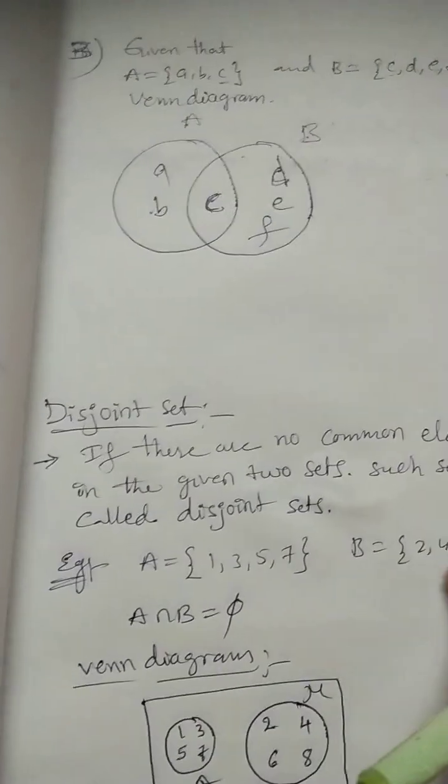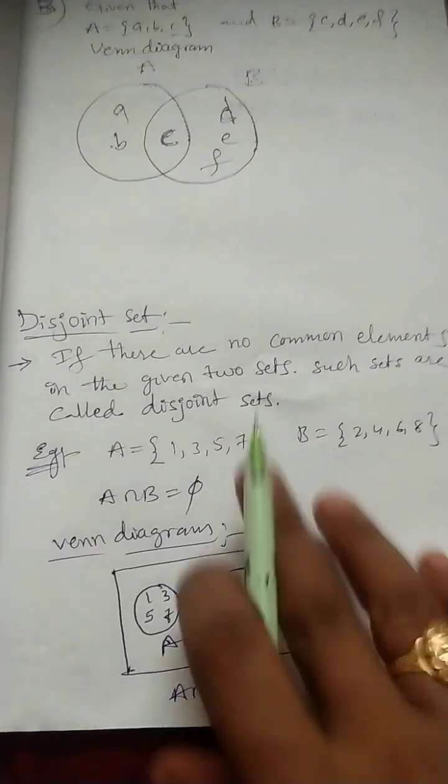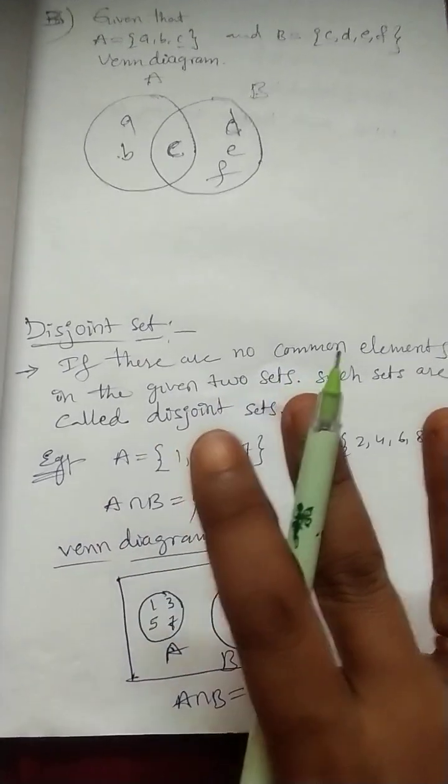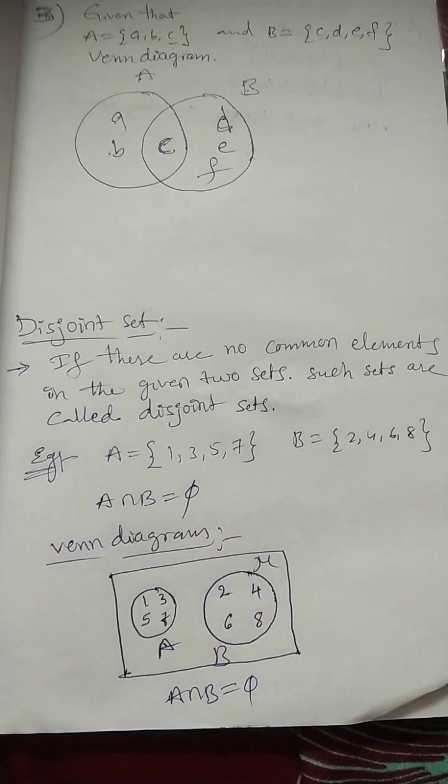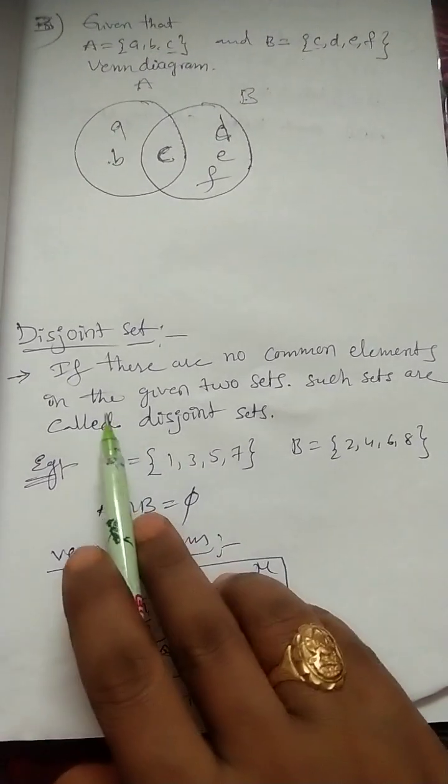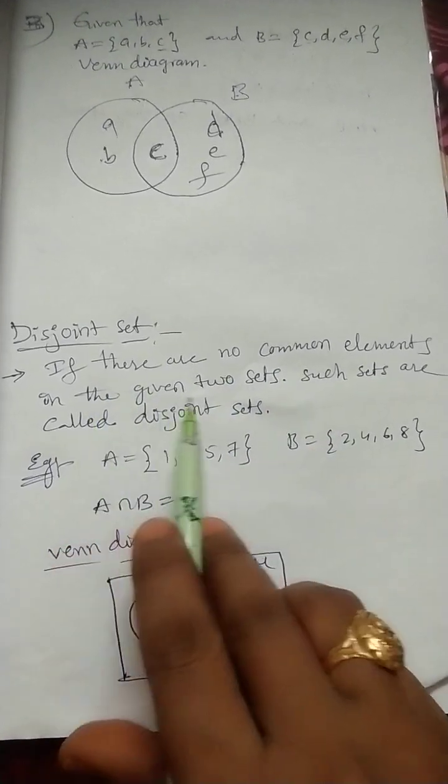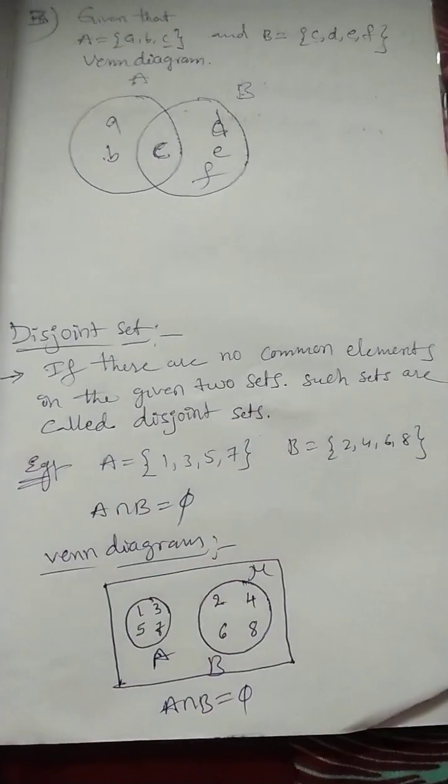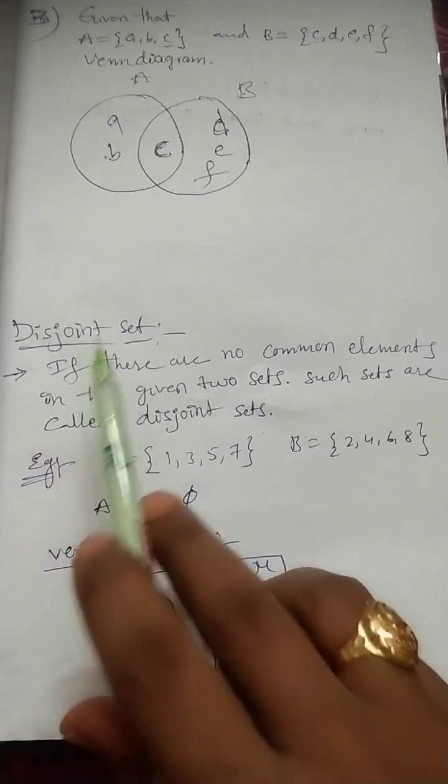Next, one concept we missed that. Disjoint set. What is the disjoint set? Actually, if any two sets not having any common elements, then the two sets we can call disjoint sets. See, if there are no common elements in the given two sets, such sets are called disjoint sets.